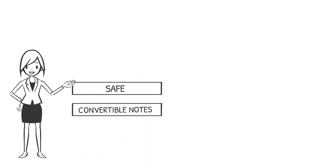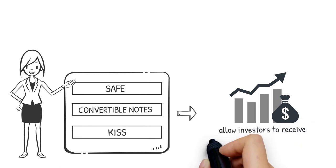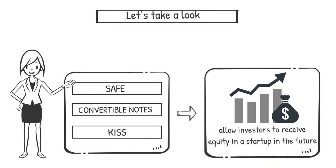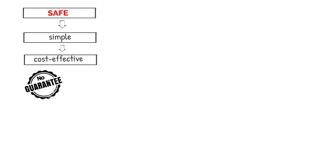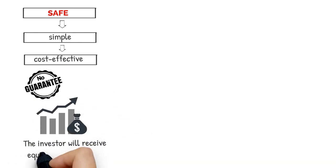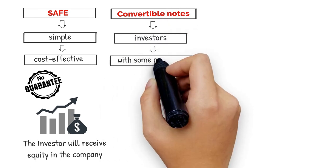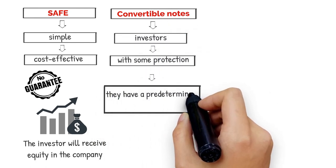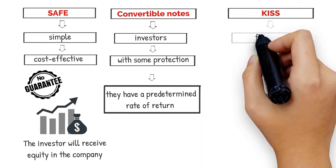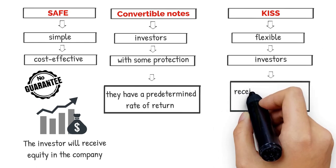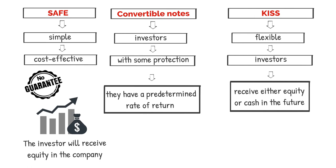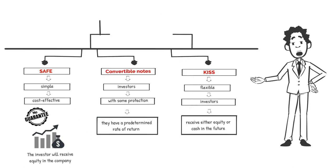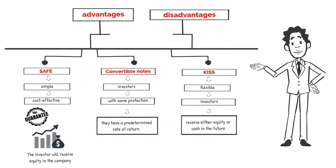SAFE, convertible notes, and KISS are all instruments that allow investors to receive equity in a startup in the future. SAFE agreements are simple and cost-effective, but there is no guarantee that the investor will receive equity in the company. Convertible notes provide investors with some protection as they have a predetermined rate of return, but they can be difficult to value. KISS agreements are flexible and provide investors with the option to receive either equity or cash in the future, but they also have the same drawbacks as convertible notes. Each of these instruments has its own advantages and disadvantages, and it is important to understand the differences before deciding which is best.